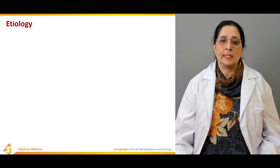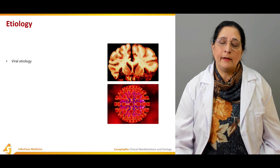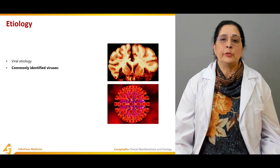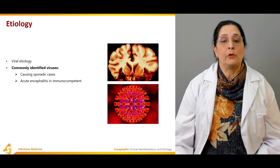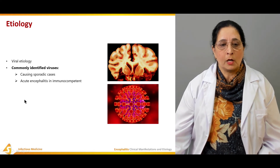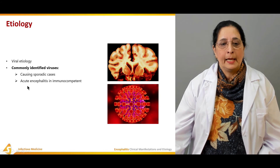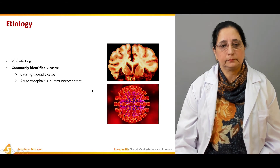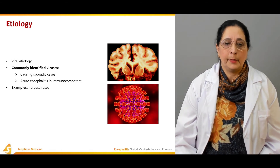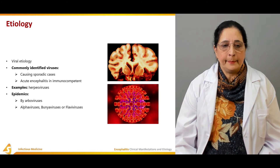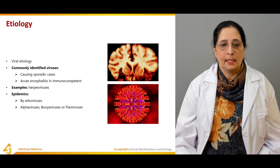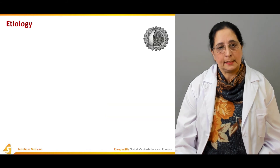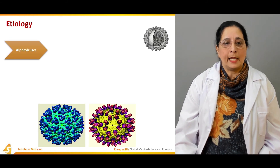Next, the causes and etiology. Viral etiology is very common. Viruses commonly associated with encephalitis cause sporadic cases of acute encephalitis in immunocompetent patients — for example, herpes viruses. Epidemics are caused by arboviruses such as alpha viruses, Bunia viruses, and flaviviruses.